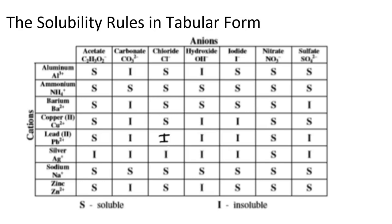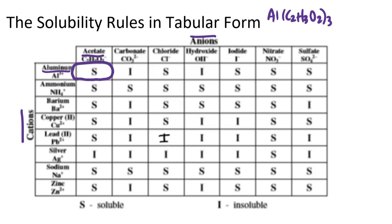The way the table works is actually somewhat simple. The cations are listed running down the left-hand side, and the anions are listed going across from left to right. So for any particular compound, suppose I wanted to understand the solubility of something like aluminum acetate — I would look up the acetate ion, which is the first item on the left, and then look up aluminum, which is the very first cation listed vertically, and travel to the intersection of those two ions.